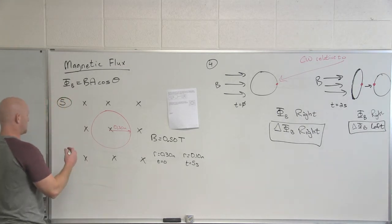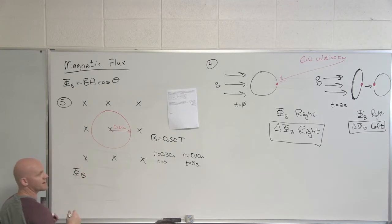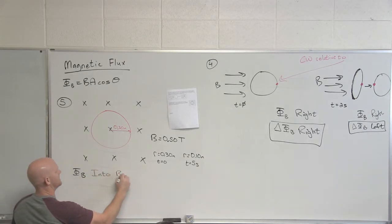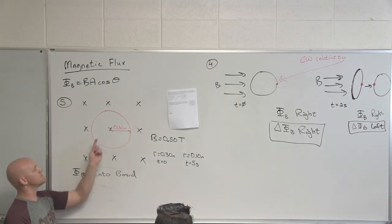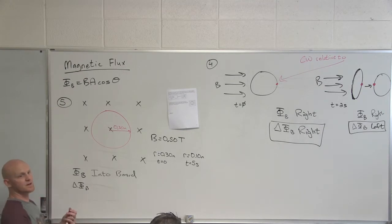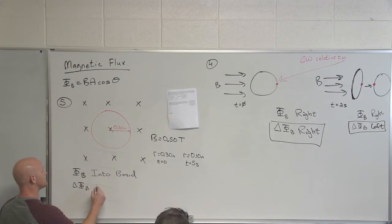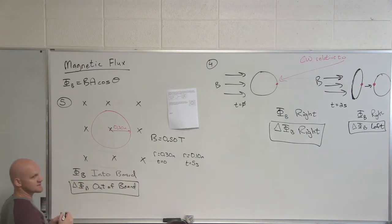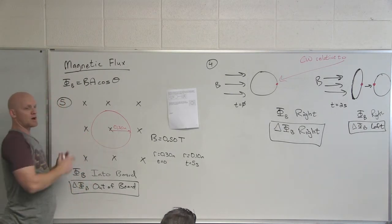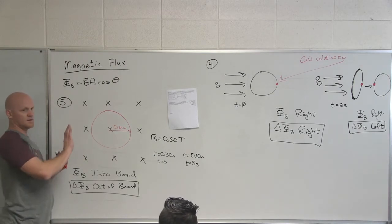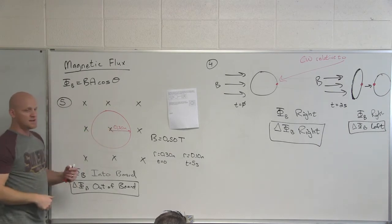This loop starts with a radius of 0.3 meters at time zero, and in five seconds constricts to a radius of 0.1 meters. Because the area is changing, the flux changes, and we'll generate an EMF and current. The magnetic flux points into the board. As the loop gets smaller and smaller, the number of field lines passing through it is shrinking — so the change in flux points out of the board, the opposite direction. According to Lenz's Law, I need to oppose that. To generate a magnetic field pointing into the board, the current goes clockwise from our perspective.